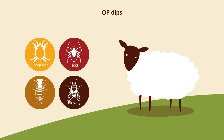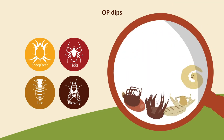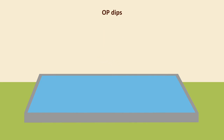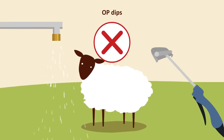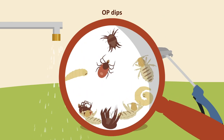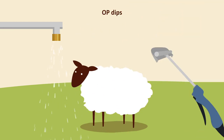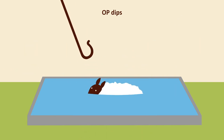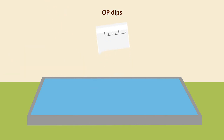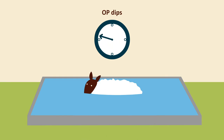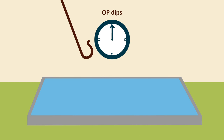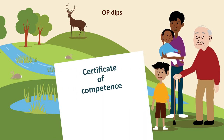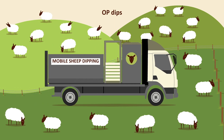OP dips will kill scab mites, lice, ticks and blowfly on the sheep and prevent reinfestation for a variable period. OP dip products should only be used in a plunge dip. Using these products in showers or jettas will not adequately wet the skin, allowing some parasites to survive, giving them the opportunity to develop resistance. The concentration in the bath must be correct from the beginning, and extra concentrate should be added to the bath on head count to maintain the chemical levels. Every sheep should be immersed in the bath for at least one minute with the head plunged under once. There is legislation regarding the use and disposal of OPs, so a certificate of competence is required to purchase them. However, the increase in mobile dipping companies has helped deal with this.